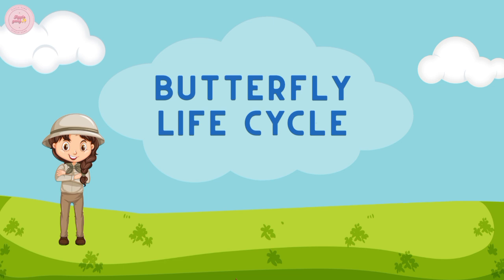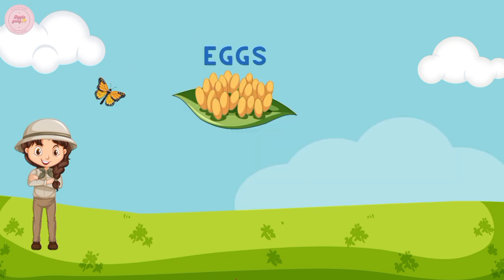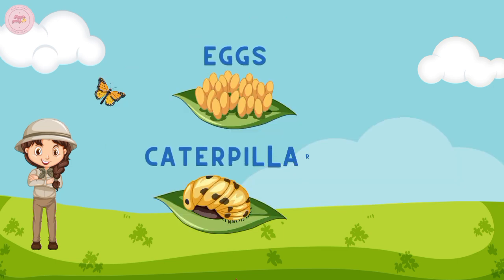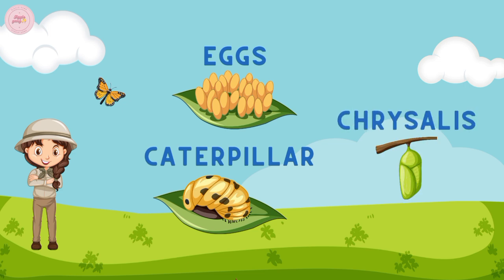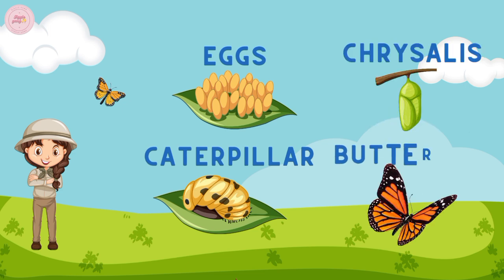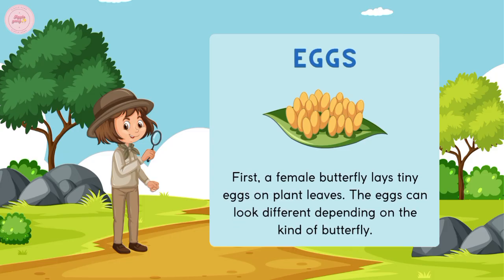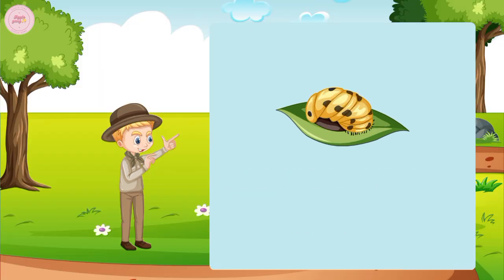The life cycle of a butterfly consists of four main stages: the egg, the caterpillar, the chrysalis, and then the adult butterfly. First, a female butterfly lays tiny eggs on a plant leaf. The eggs can look different depending on the kind of butterfly.